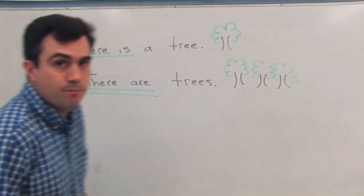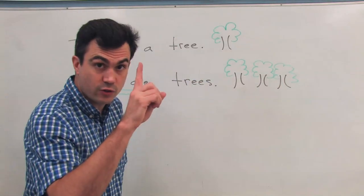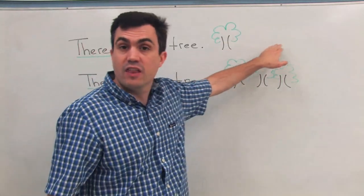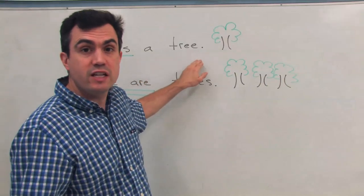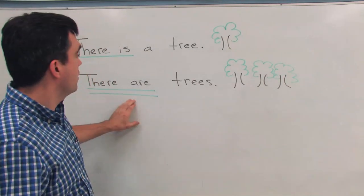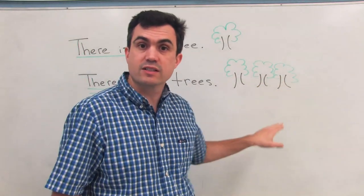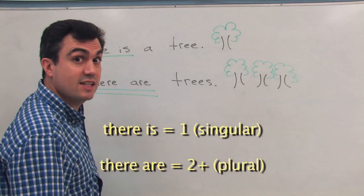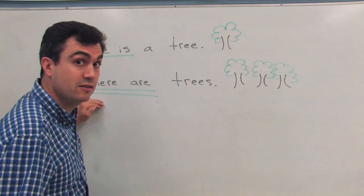Simply, 'there is a tree' — one tree, a tree exists. If I say 'in the yard,' we have a tree, we have a place. 'There is a tree' — a tree exists. 'There are' — plural. 'There are trees.' We don't know how many. So, 'there is' — something singular exists. 'There are' — something plural exists.